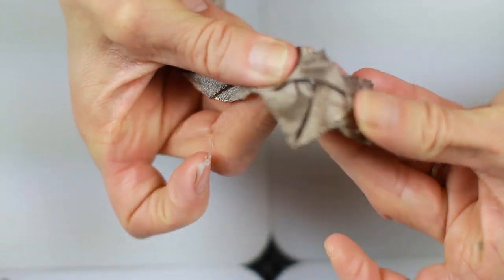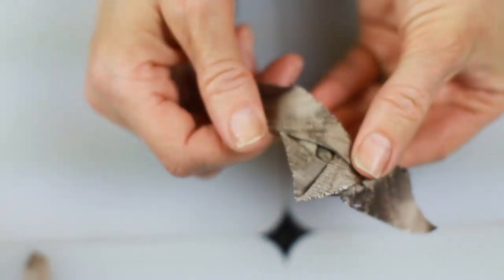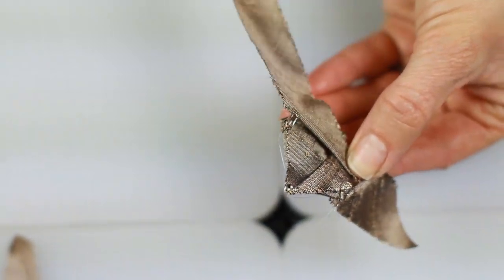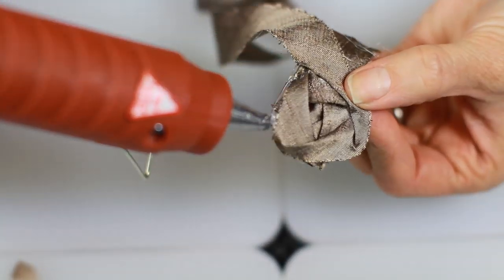Once you've got that done, you're going to add a few more dabs of glue and keep folding. Now you can make the flower obviously as big as you'd like. Sometimes I like to do smaller rosettes, sometimes I like the bigger flowers.